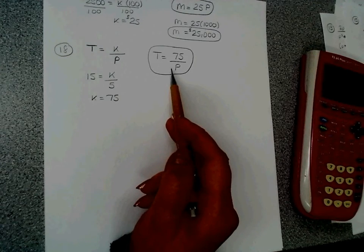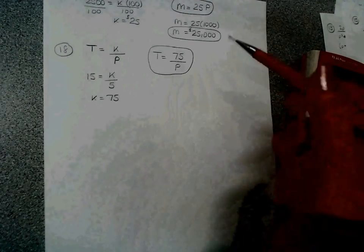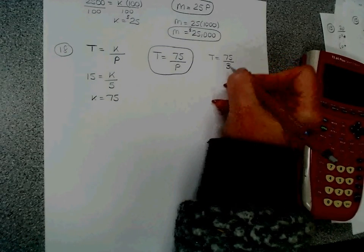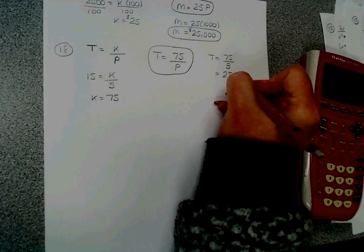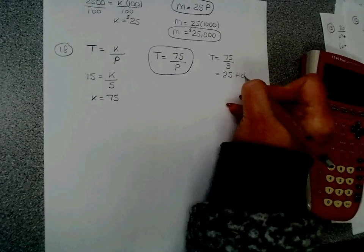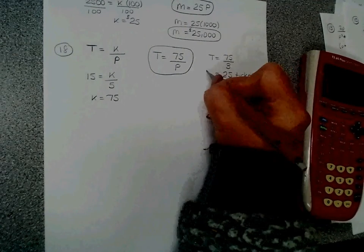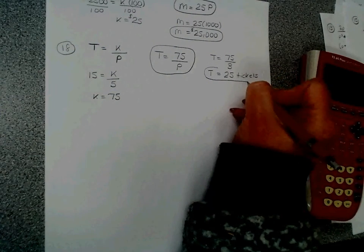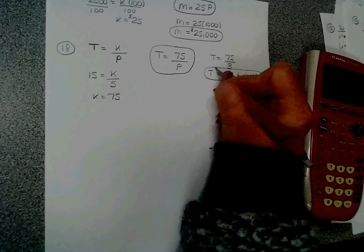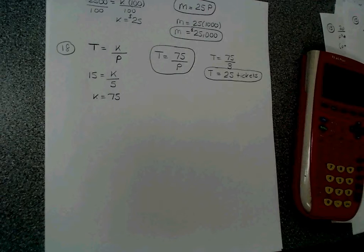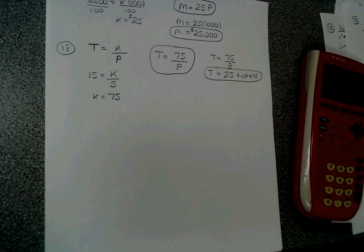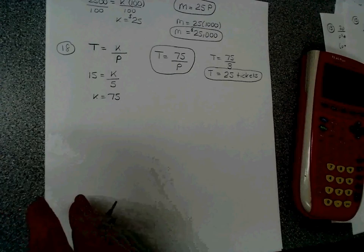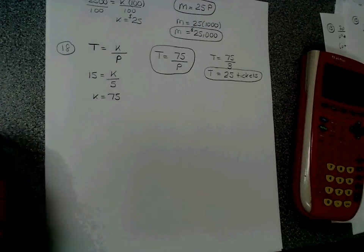How many tickets can Caleb buy if they cost $3? So tickets equals 75 divided by 3, which would be 25 tickets. So he can buy 25 tickets if they only cost 3, he can only buy 15 if they cost 5. If they cost 75, he can only buy 1. And that is 16, 17, and 18. Here we go.